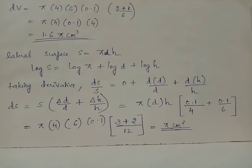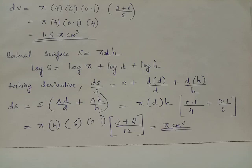When S is multiplied to the right-hand side, we have ds = S × (δd/d + δh/h). Giving the particular values d = 4 cm, h = 6 cm, and δd = δh = 0.1 cm, we have ds = π × 4 × 6 × 0.1 × (3+2)/12 = π cm². Hereby we have verified the error values while computing volume and lateral surface area of the right circular cylindrical can.